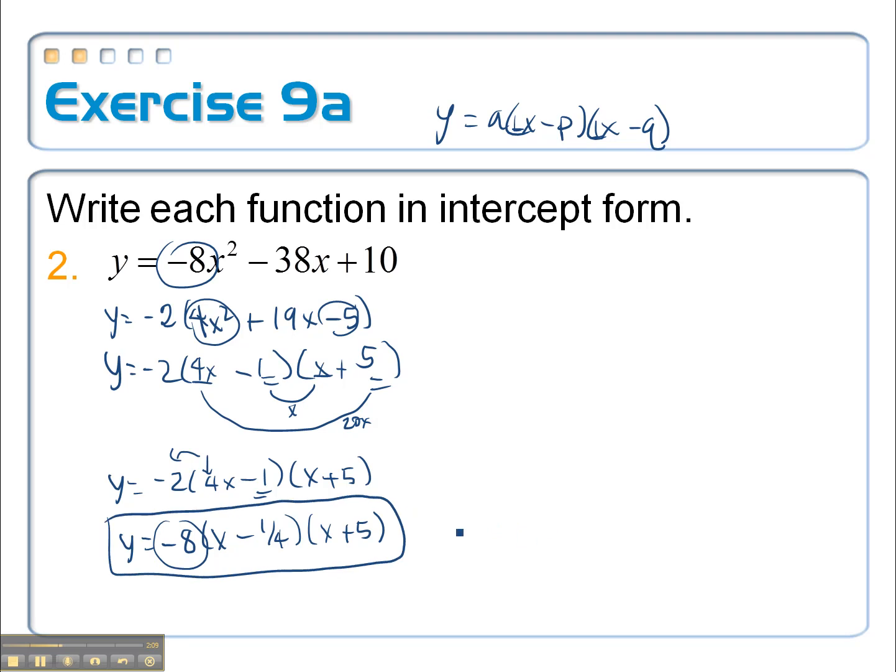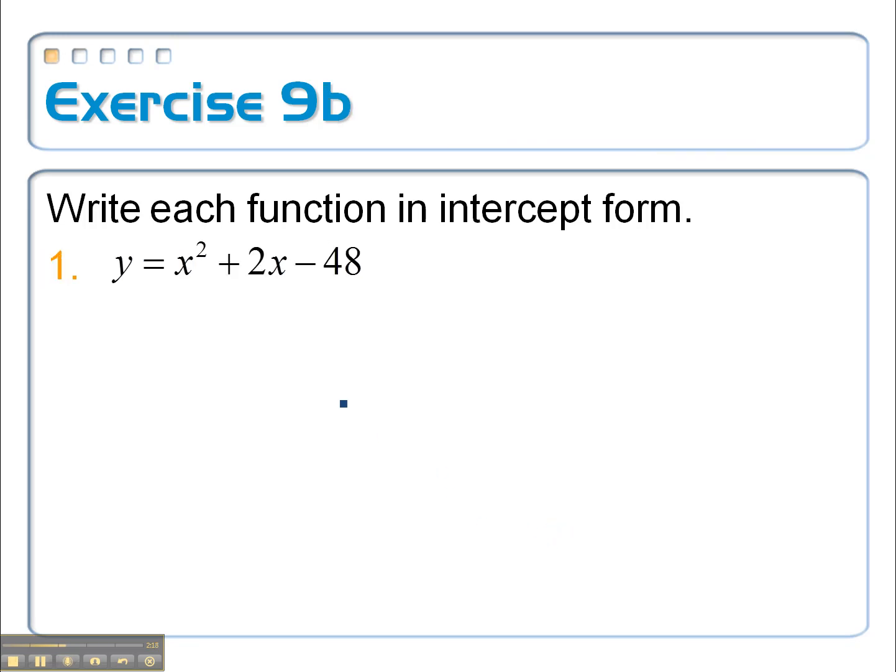Let's try another one. So y equals x squared plus 2x minus 48. This one's a little bit easier, just open up our two sets of parentheses. Our product has to be negative 48, they have to add up to 2, so that's going to be an 8 and a negative 6: x plus 8, x minus 6, and it's done. Our two x intercepts are negative 8 and positive 6.